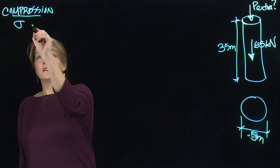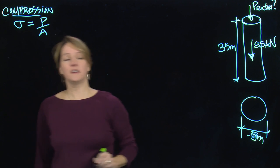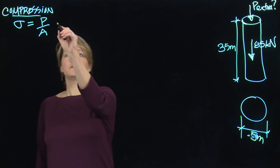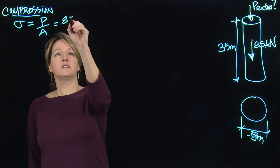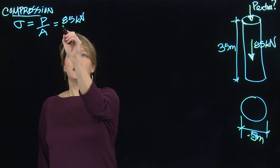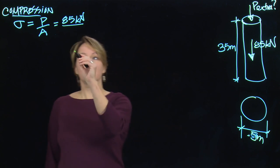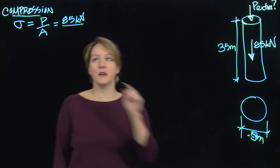I'd compute the compressive stress. That is force over cross-sectional area. In this case, my force so far is 85 kilonewtons, that's just from the self-weight of the tree. I'm going to divide by the cross-sectional area. My cross-section is circular.